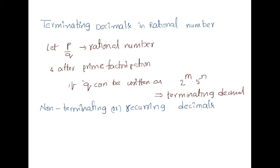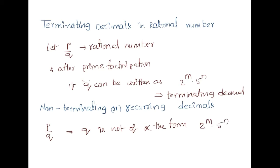However, if the prime factorization is done and Q is not of the form 2^m into 5^n, then it gives a non-terminating, recurring or repeating decimal.